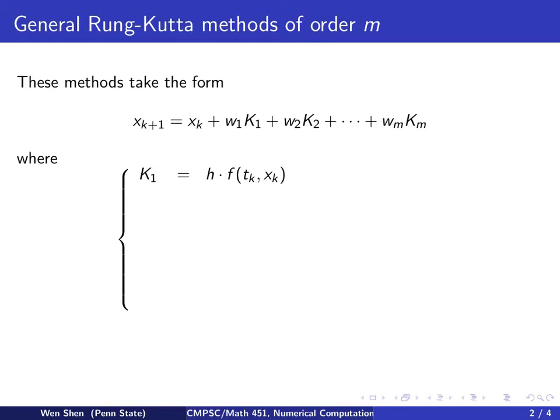And the constants, capital Ks, are computed as follows. K1 is usually always H times F, evaluated at Tk and xk. And K2 is computed as H times F at Tk plus some number A2 times H, where A is usually less than 1, and x plus some number B2 times K1, where B2 is less than 1. And K3 is computed by using both K1 and K2. So T is evaluated at Tk plus A3H, and for x, you would add B3 times K1 plus some constant C3 times K2.